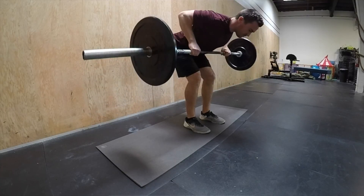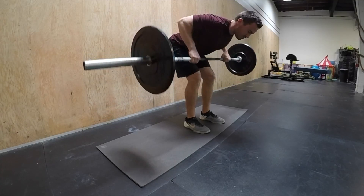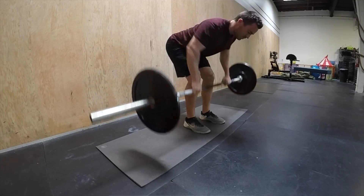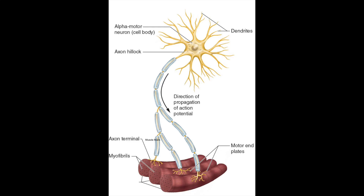Note that muscle cell and muscle fiber will be used interchangeably. We have something called an alpha motor neuron, which innervates muscle fibers, because we need an electrical signal from the brain or spinal cord to elicit contraction. This may be voluntary — we want it to happen — or involuntary, meaning we didn't want it to happen.